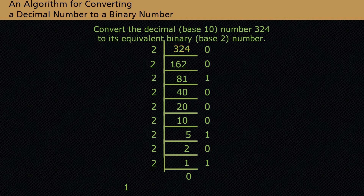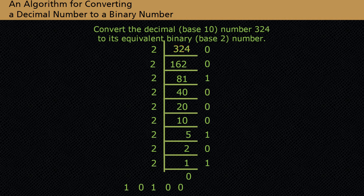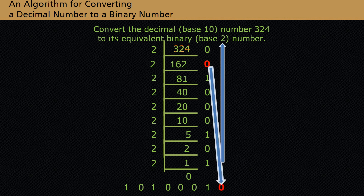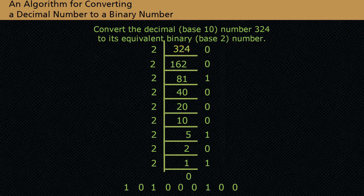The binary equivalent of decimal 324 is obtained by using the remainders in the right column. We write the binary equivalent by starting at the bottom of the remainder column and working up. Decimal 324 is equivalent to binary 10100100.